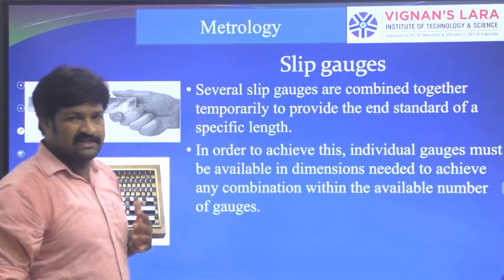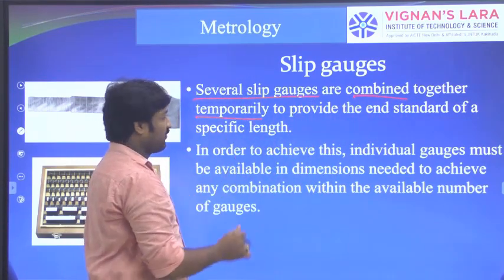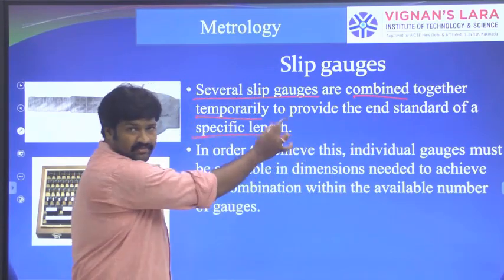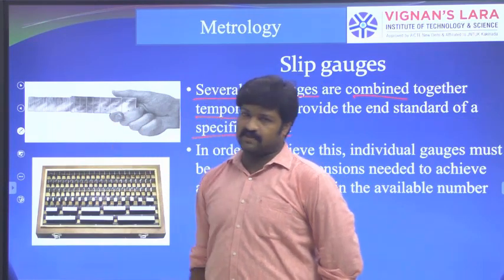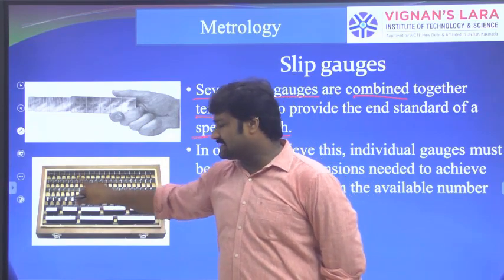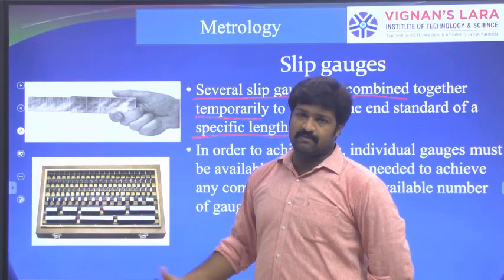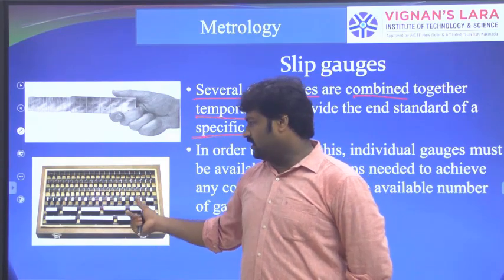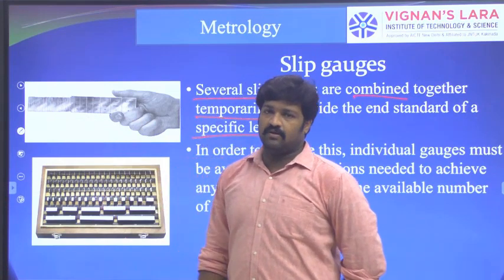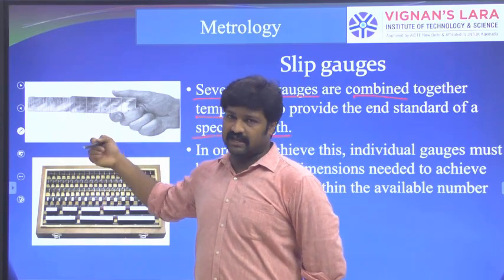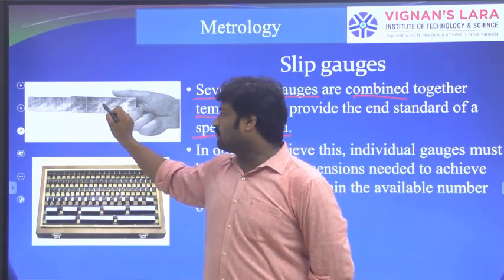Several slip gauges are combined together temporarily to provide an end standard of a specific length. To obtain a certain length, we combine a number of slip gauges. The required slip gauges are picked from the set and combined together. For example, if I want 15 mm, I can use 10 plus 2 plus 3. The blocks should be joined in sequence, and all the required blocks are combined to achieve the required dimension.